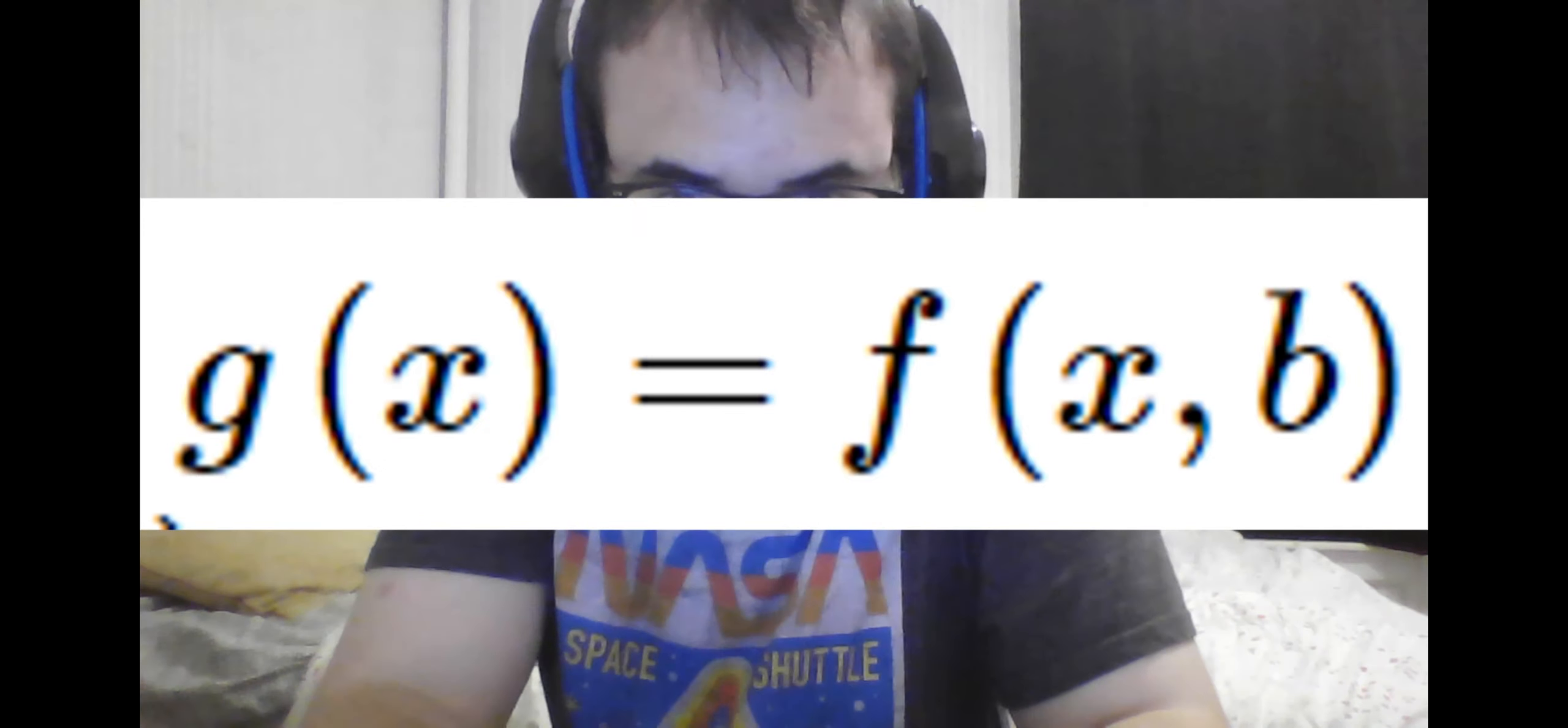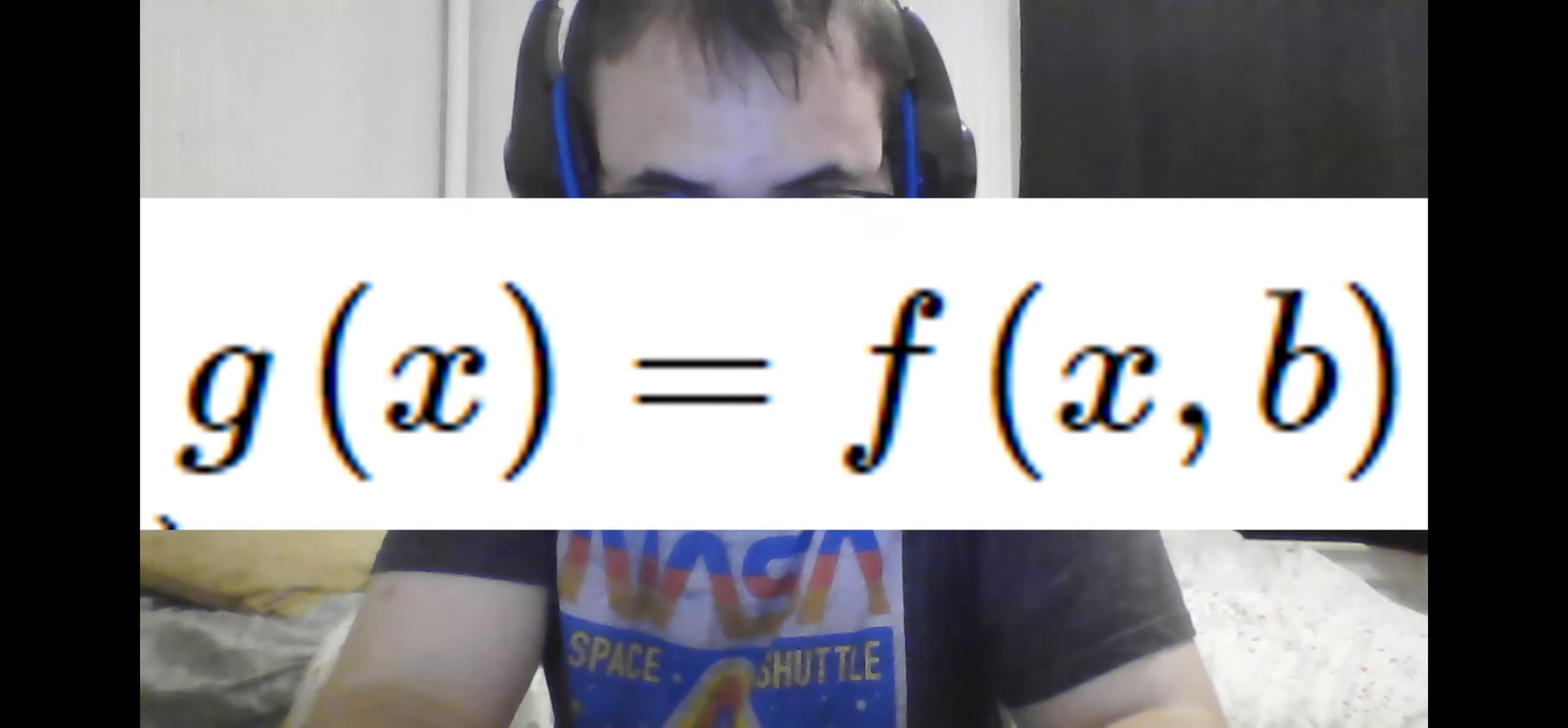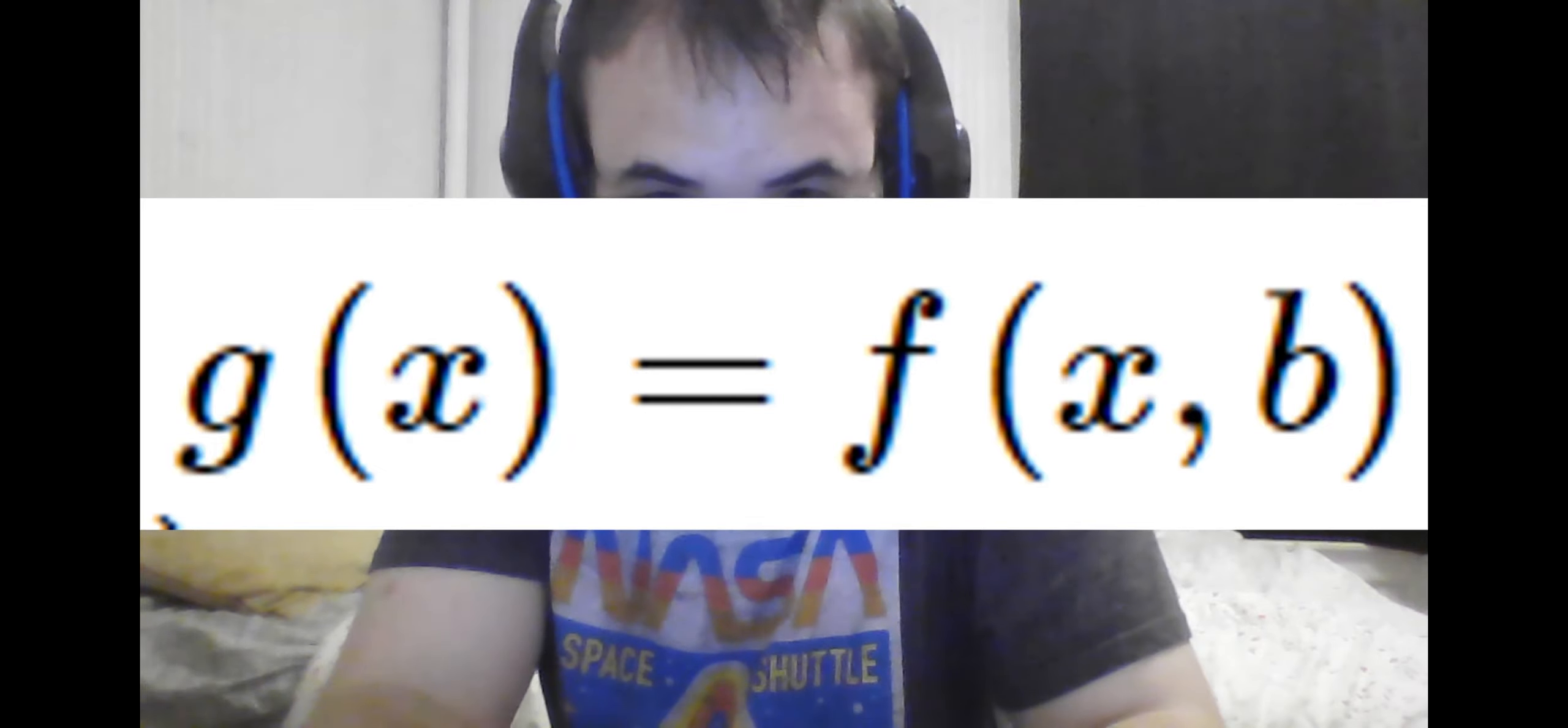Since we know g(x) is a single variable function, it follows that we can state its derivative equals 0 at the critical point. And by what we defined earlier, the derivative of g(x) is also the partial derivative with respect to x at the point (a,b). So the partial derivative with respect to x is also 0.